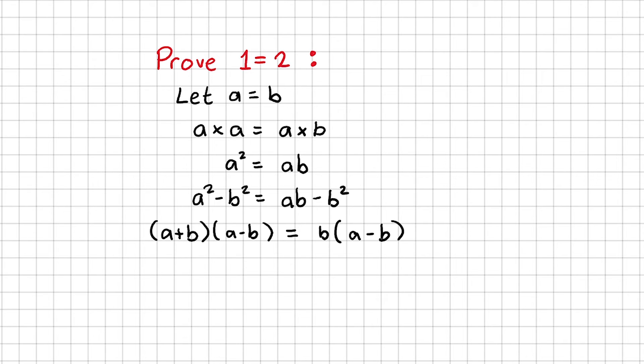At this point, I can cancel these two brackets out, A minus B, from both sides. That leaves me with A plus B equals B. But we said earlier that A is equal to B, so that's the same as B plus B equals B, or 2B equals B. Dividing both sides by B, that boils down to 2 equals 1.